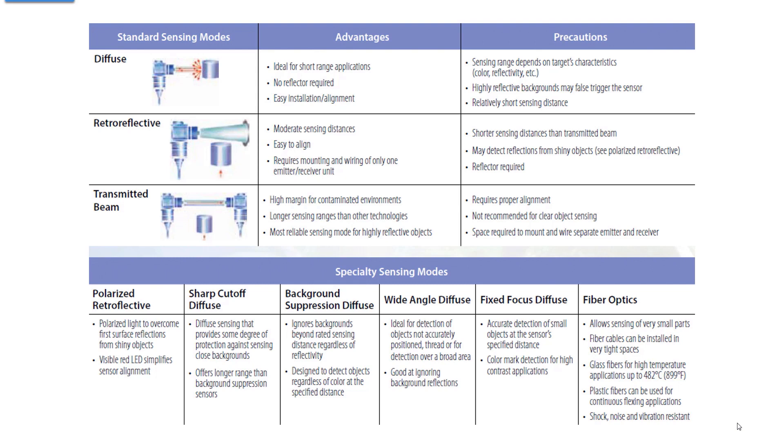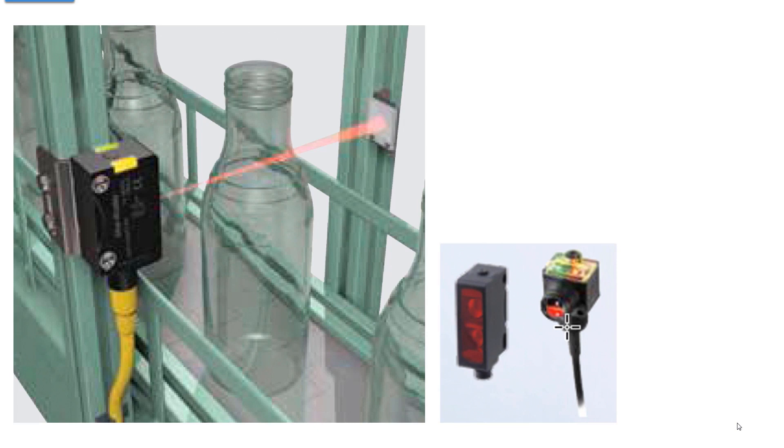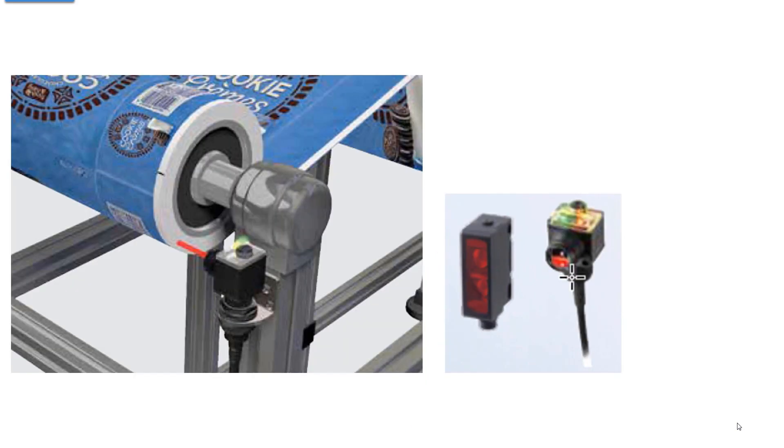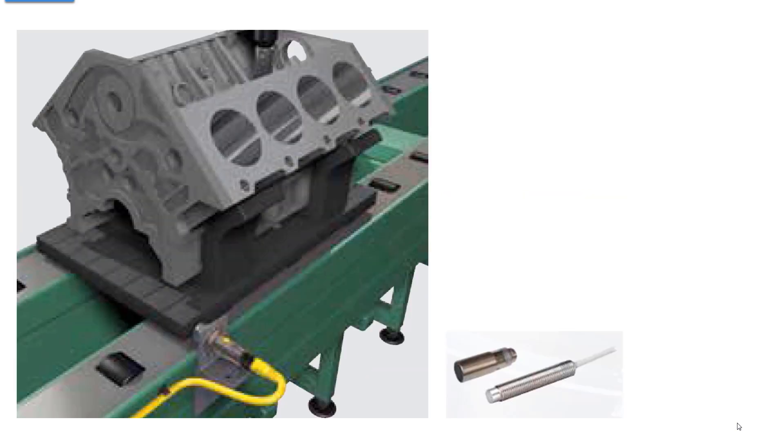Now here a sensor with a reflector is sensing empty bottles on a line. Most of these sensors have two LEDs - one to show that there's power on it and the other to show whether it's tripped or not. That helps you when you're adjusting the sensitivity. Here's a diffuse photo eye looking at the edge of a roll of either paper or plastic. When the roll gets too low it no longer sees it and says you need to replace it.